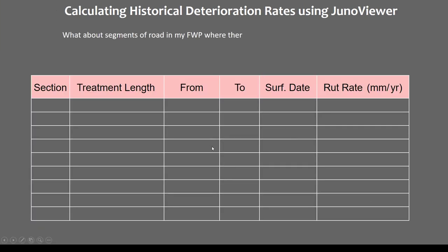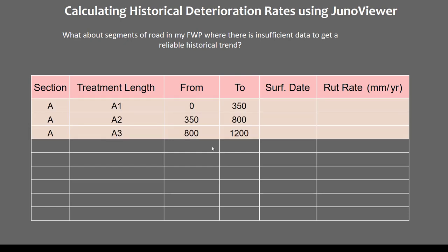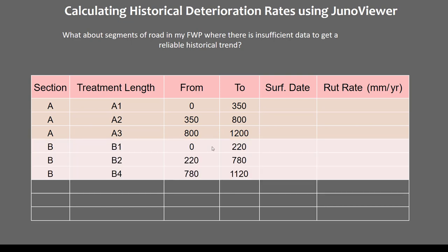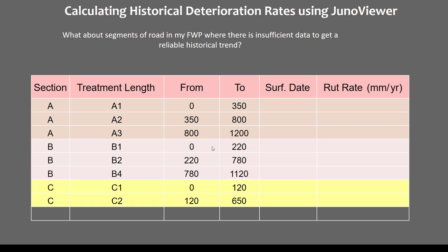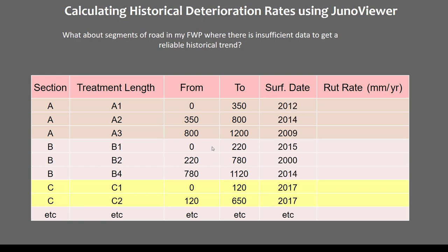What about segments of road in my ForwardWorks program where there is insufficient data to get a reliable historical trend? JunoViewer can go right through the ForwardWorks program for each road section — such as road sections A, B, C, and so forth — and, of course, we are expecting some indication of the surfacing date or last treatment date. JunoViewer will loop through all of those segments, which could be hundreds or several thousands, and batch calculate the deterioration rate on each segment.